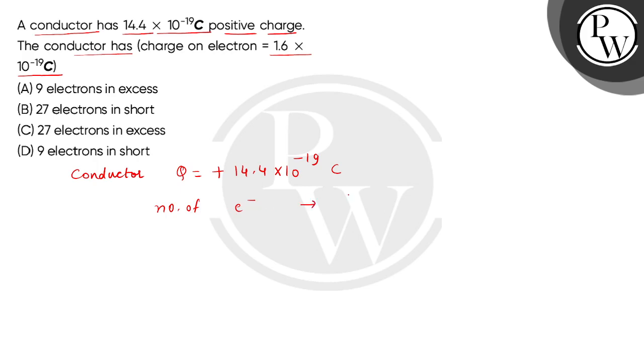First of all, we have a concept of quantization of charge. Quantization of charge: the total charge on a conductor is an integral multiple of the basic unit, that is electronic charge.